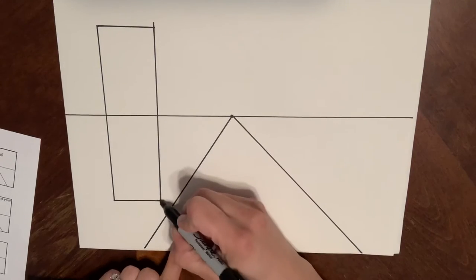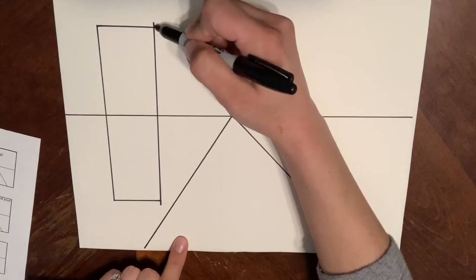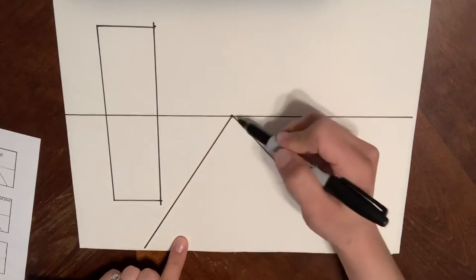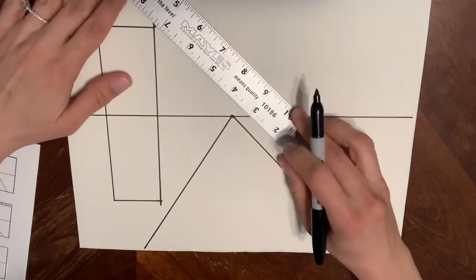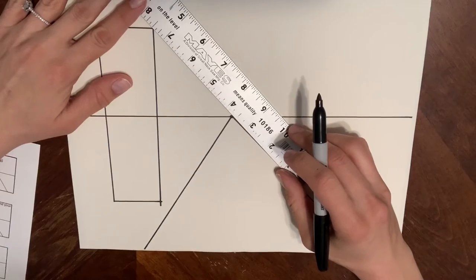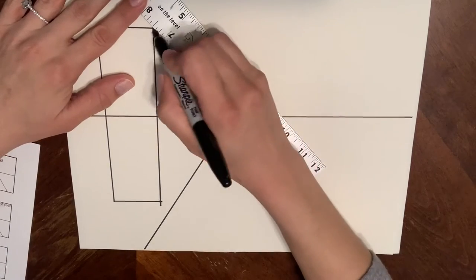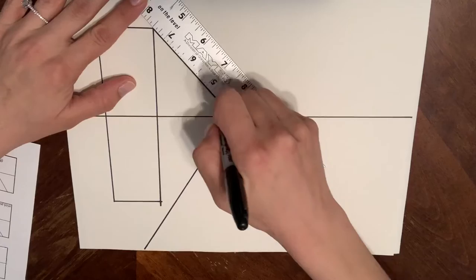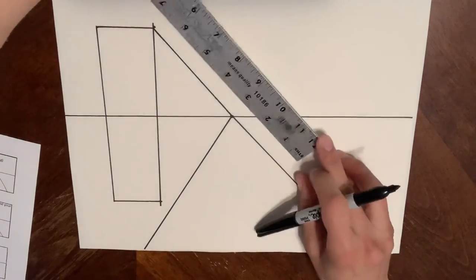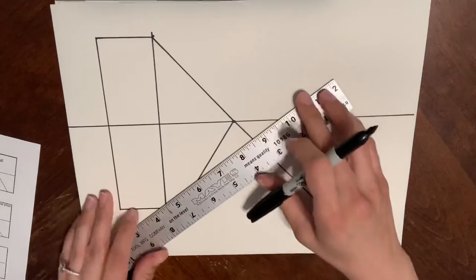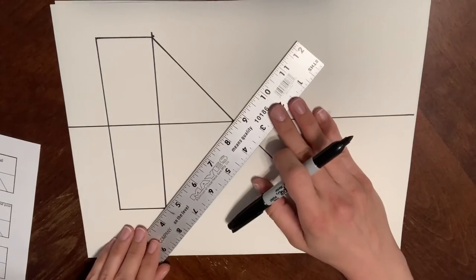Next, we want to connect the two corners of the building that's closest to the vanishing point to the vanishing point. So here I'm going to line up my ruler with the vanishing point and the top corner of the building and draw a line that goes straight towards the vanishing point. Next, I'm going to connect the bottom of the rectangle to the vanishing point as well.